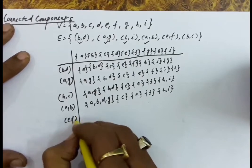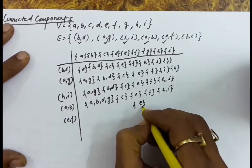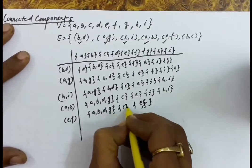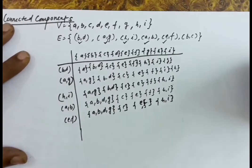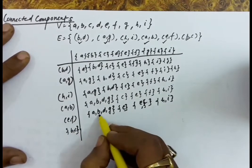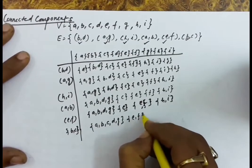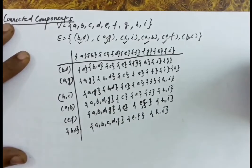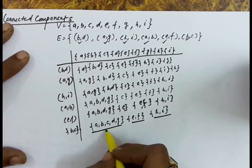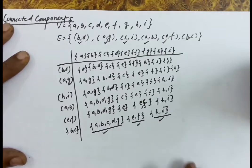Next edge is E-F: these two sets will be combined into {E, F}. Then edge B-C: B and C are in two different sets, so we perform the union, resulting in {A, B, C, D, G}. We have now taken all the edges and are remaining with three sets: {A, B, C, D, G}, {E, F}, and {H, I}. These three sets tell us there are three connected components in the graph.